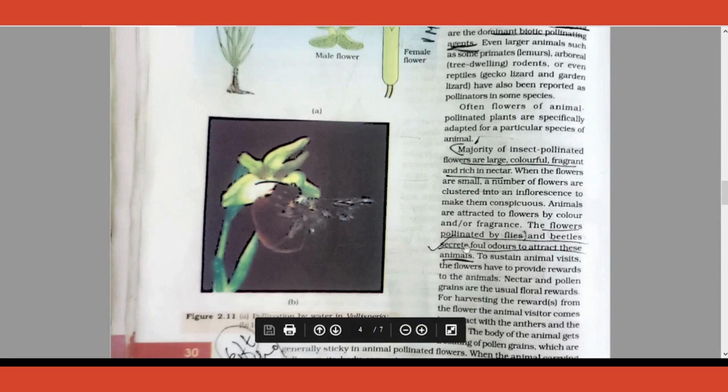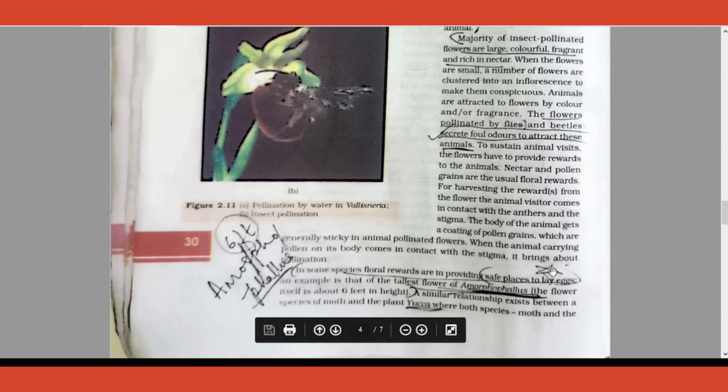Please underline the statement: which all? If a flower is emitting foul odor, what is the agent of pollination? It is beetles and flies. Again, one more question you will get from there.